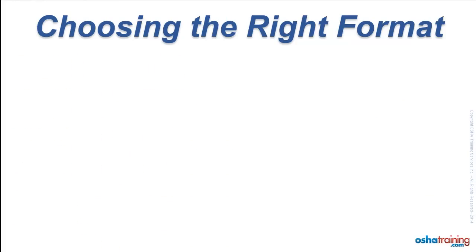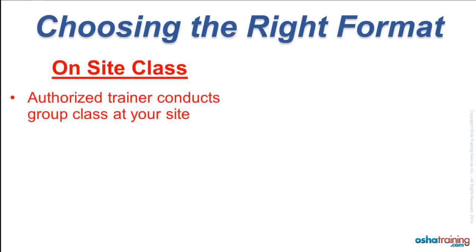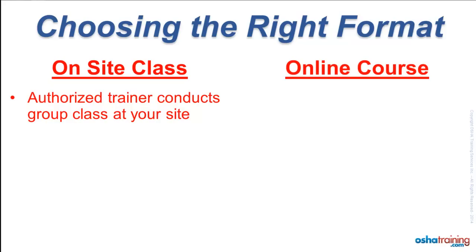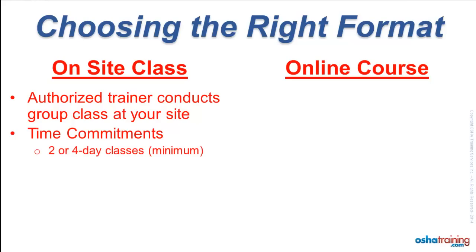There are two formats available for taking OSHA 10 and 30-hour courses through our company. The first is on-site classes, where you schedule a time for our OSHA authorized trainer to come to your site and conduct a class for your group. The other option is our OSHA accepted online courses. On-site OSHA 10-hour classes are typically spread over two days and 30-hour courses over four days, because OSHA limits the maximum training time to no more than seven and one-half hours on any given day, plus additional time for breaks.